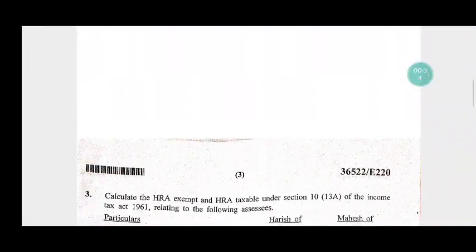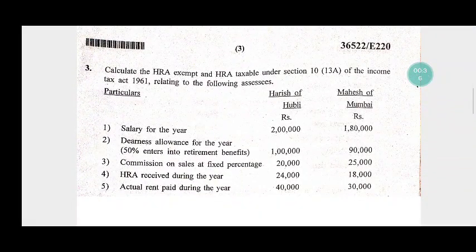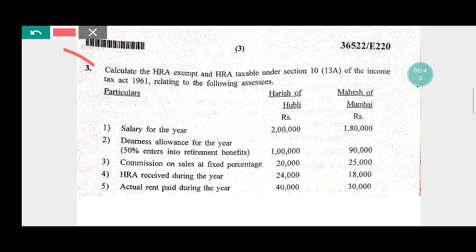In this five marks question, we need to calculate the HRA — house rent allowances — exempted and house rent allowances taxable under Section 10 sub-section 13A of the Income Tax Act 1961, relating to the following assessee. We need to calculate the HRA exempted as well as HRA taxable.